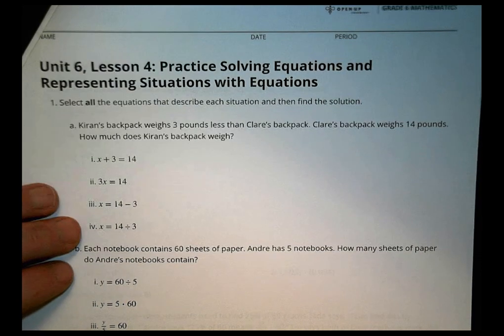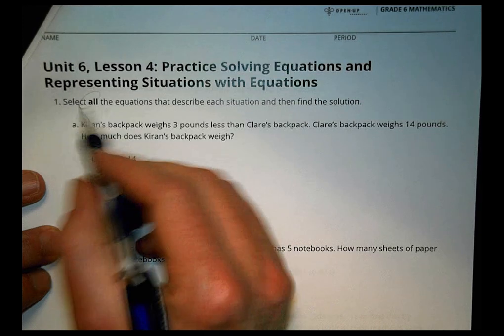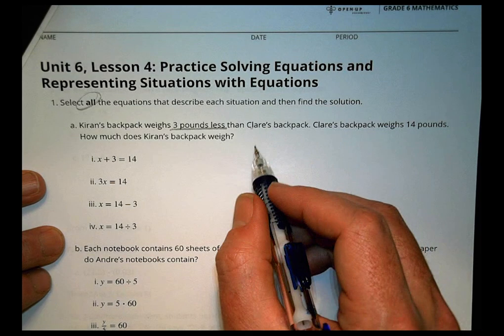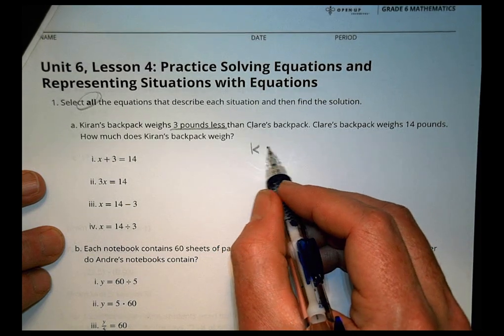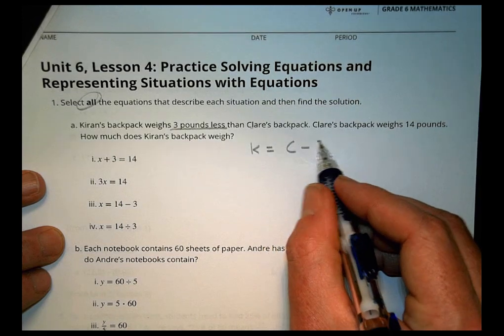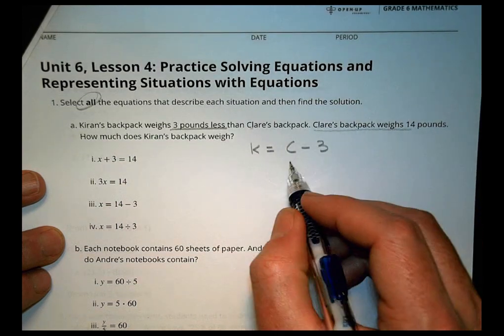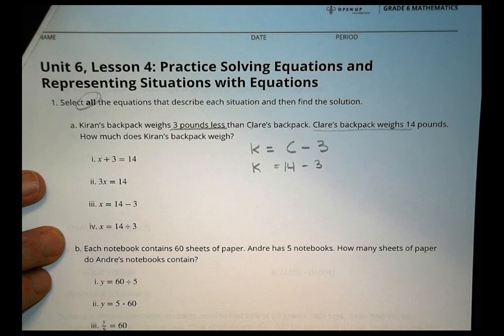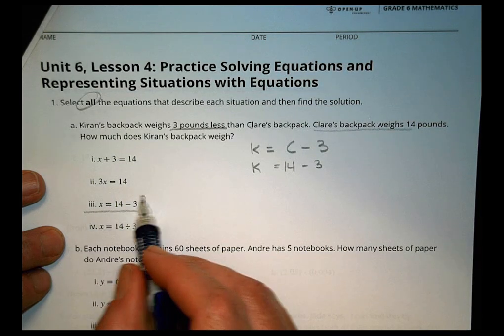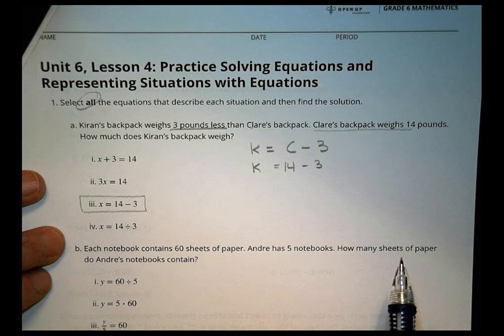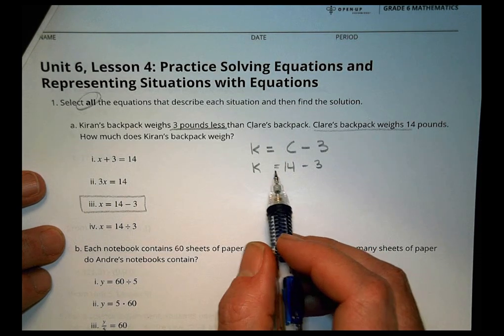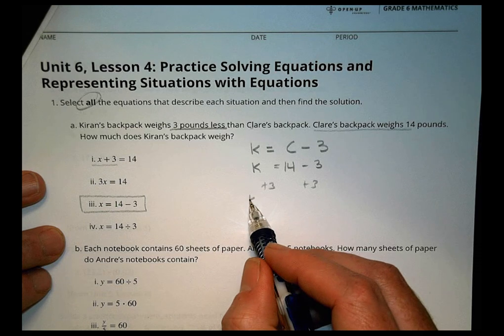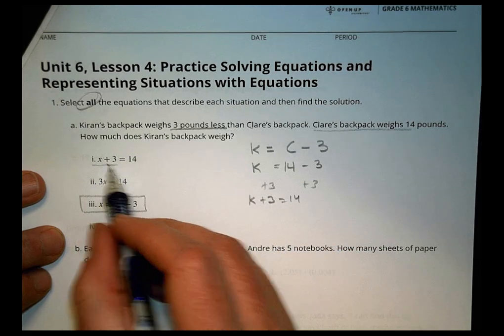Alright, select all the equations that describe each situation, then find the solution. Alright, looking for more than one probably. Kieran's backpack weighs three pounds less than Claire's backpack. Alright, so what do we know? Kieran's backpack weighs three pounds less than Claire's. So it's Claire's minus three. Now Claire's backpack weighs 14 pounds. So 14 pounds minus three equals what Kieran's weighs. So we know that. Now, so I can see that one right here. X equals 14 minus three.